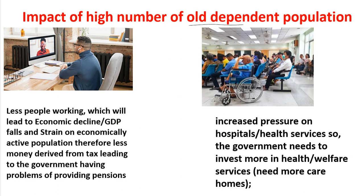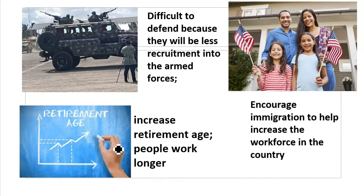The impacts of having a lot of old dependent population include: fewer people working, leading to economic decline, falling GDP, and strain on the economically active population; less tax revenue, causing government problems in providing pensions; increased pressure on hospitals and health services; the government needs to invest more in health, welfare services, and care homes; countries are difficult to defend due to less recruitment into the armed forces; retirement age increases so people work longer; and immigration is encouraged to increase the workforce.